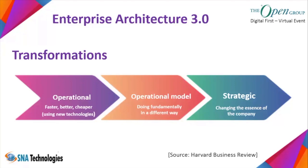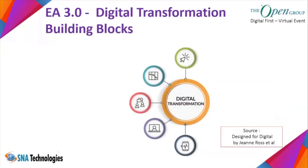Using digital technologies alone is operational; if you are also changing the business model, that is the operational model transformation; and if you are changing the whole way you do business, that is strategic. The book 'Designed for Digital' by Jeanne Ross and co-authors identifies five building blocks for digital transformation: first, you need shared customer insights — an understanding of customer needs using big data, social media, and analytics.